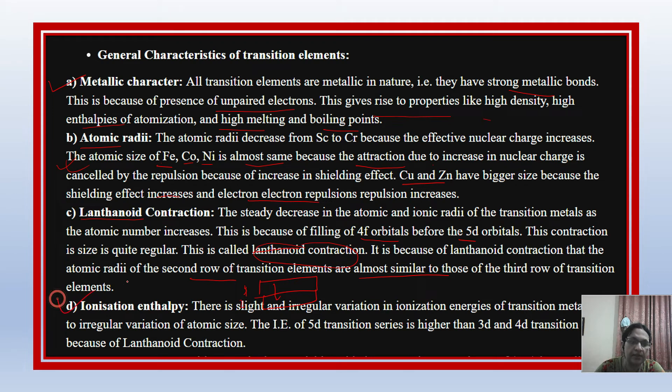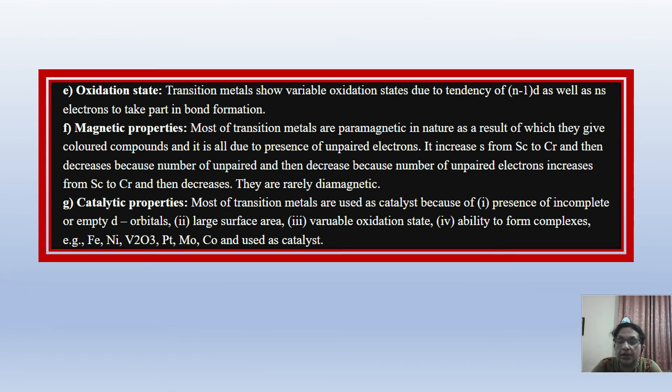The next point is ionization enthalpy. What does ionization mean? Ionization enthalpy is affected by lanthanoid contraction. Now let's go to oxidation state. Transition elements have variable oxidation states due to the tendency of n-1 d electrons. Electrons are removed from d orbitals so that bonding can occur.